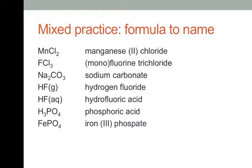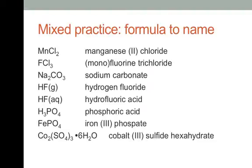One more example going from formula to name: we have a hydrated compound, so it will end in 'hexahydrate.' Three sulfates — each sulfate is 2−, so the total negative charge is 6−. We have two cobalts, so 6+ divided over two cobalts gives 3+ each. This is cobalt(III) sulfate hexahydrate. There was a labeling error in the presentation — that should read 'sulfate.'